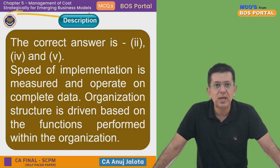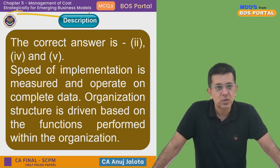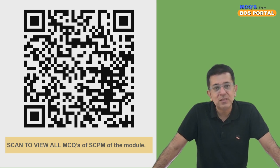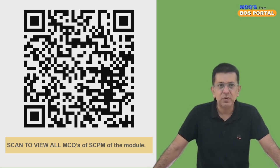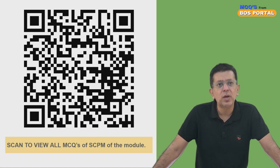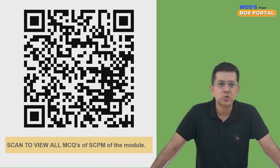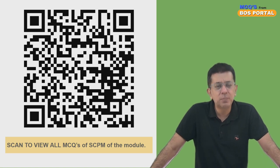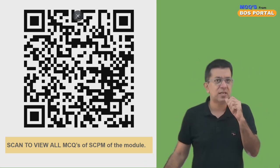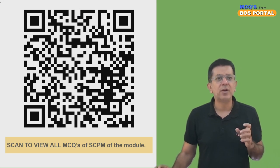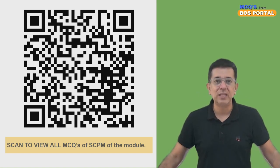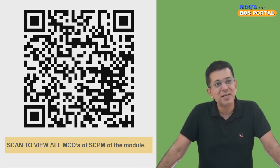The correct answer is options 2, 4, and 5: speed of implementation is measured and operates on complete data; organization structure is driven by functions performed; and failure is an exception. Please share these SCPM videos in your groups — it motivates me to make more videos. Scan the playlist QR to share all MCQs with your friends. Until next time, stay fit, stay healthy, smile!